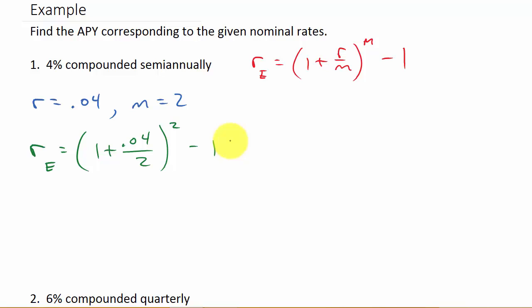So what we would do here, plug it in, punch it into your calculator. I would just type in 1 plus 0.04 divided by 2 and hit enter. That should give you 1.02. And then hit your exponent button, raise to the second. Hit equals. That should give you 1.0404 and then minus 1 and hit enter.